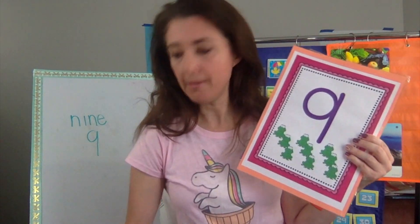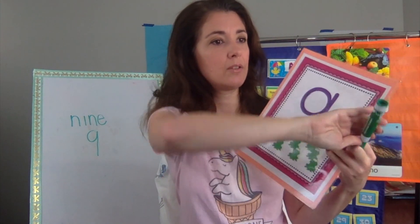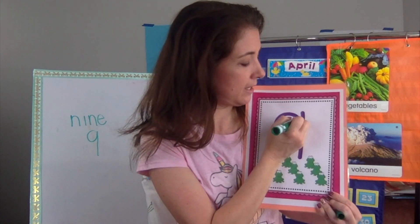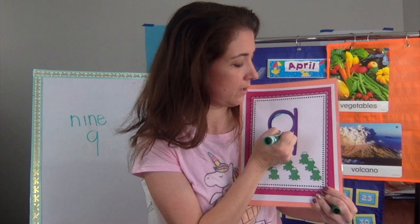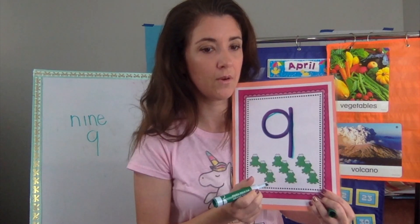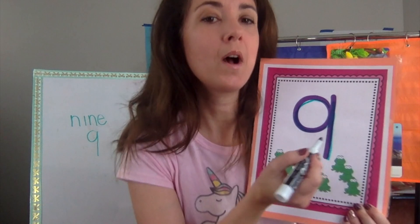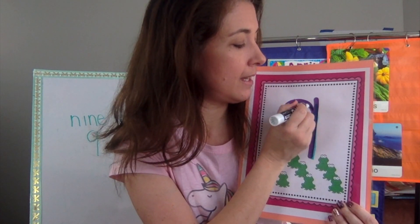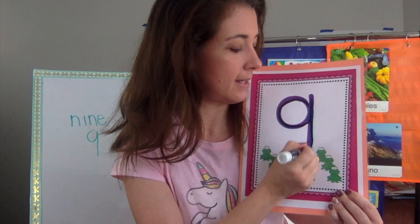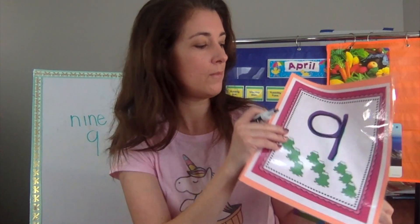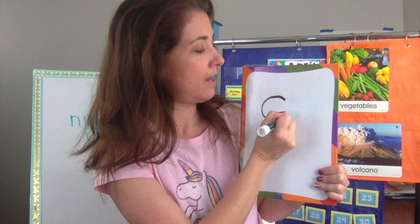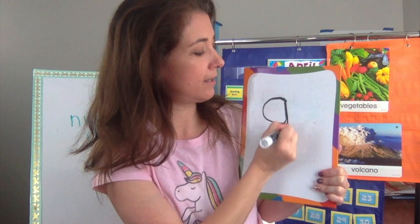Let's talk about writing the number nine. I'm going to show you with my marker how to write the number nine. I'm going to start at the ceiling, make a curve to the middle, helicopter up to the ceiling, and submarine down to the floor. Here we go with the black marker so you can see me do it one more time. Start at the ceiling, curve to the middle, helicopter up to the ceiling, submarine to the floor.